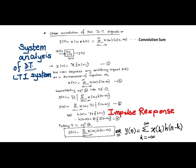If we see the relationship between output and input for the given LTI system, output y of n is a function of x of n, where an input x of n can be an arbitrary signal which can be expressed in terms of an impulse function, or rather a weighted and shifted impulse function delta of n minus k.